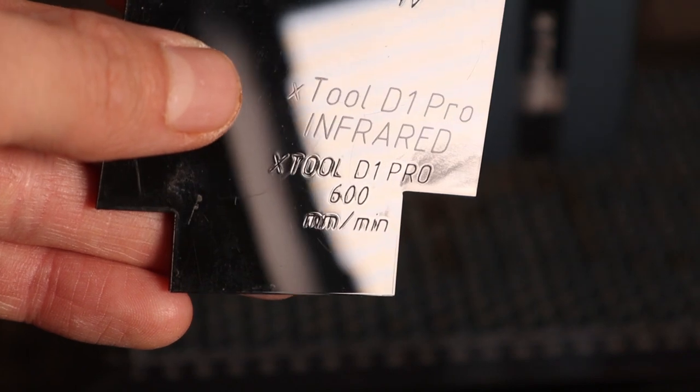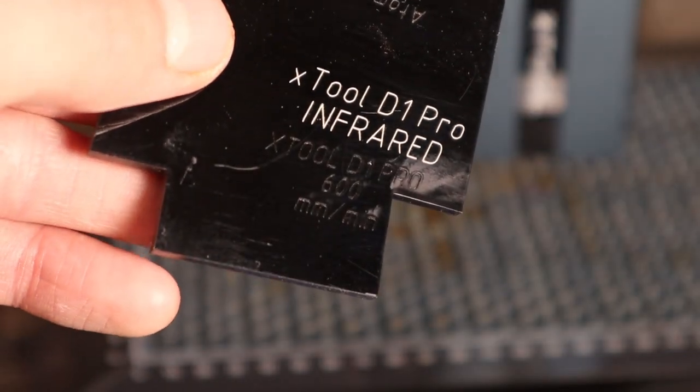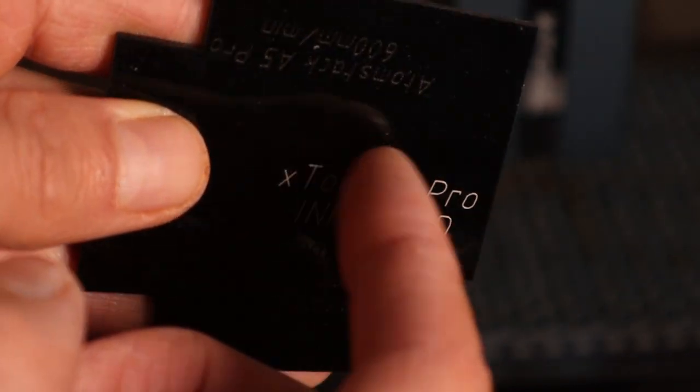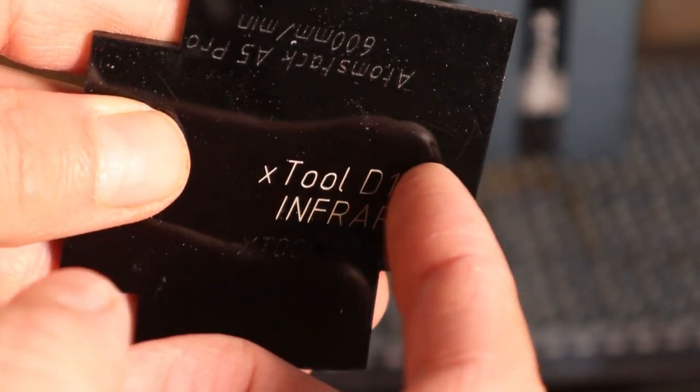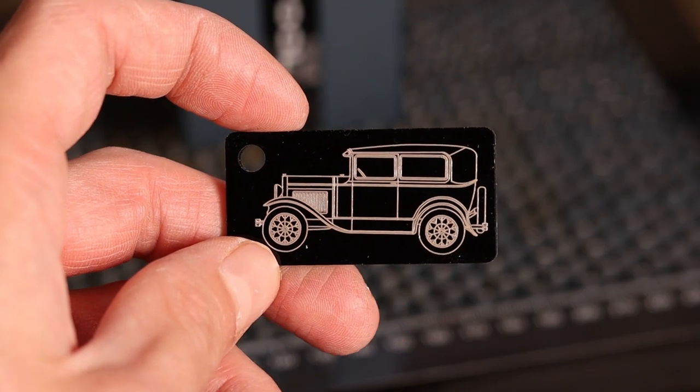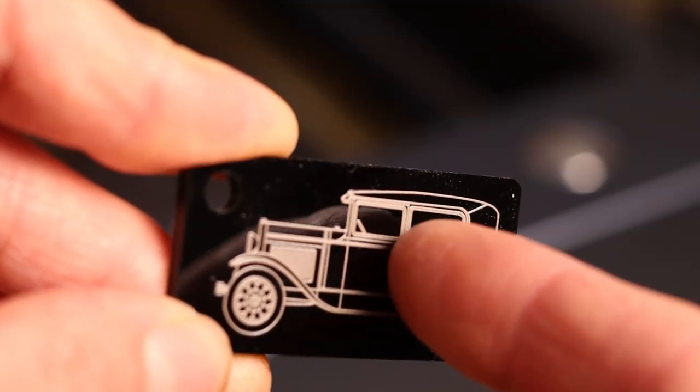Compared to engravings made with the blue laser module, the engravings look like night and day. The engraved line pops out and can be caught easily with a fingernail. The engravings on black acrylic is very durable and will last a long time.